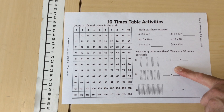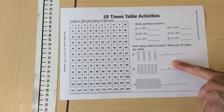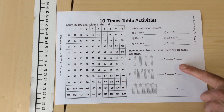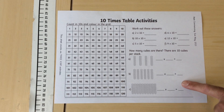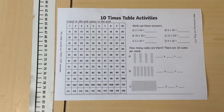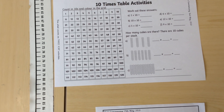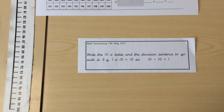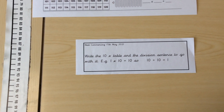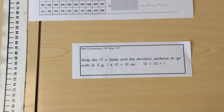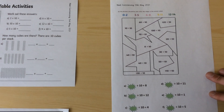You could also use things like the cubes, and if you haven't got those cubes at home you can use other things — like a pencil could represent the 10 and a coin could represent the ones. We've also got writing the ten times table and the division sentence to go with it. An example is: 1 times 10 equals 10, so we also know that 10 divided by 10 is equal to 1.